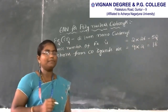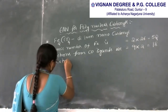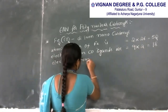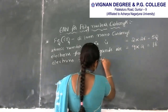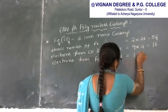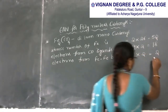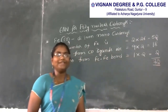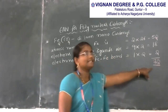In di-iron nonacarbonyl there is 1 metal-metal bond, which is an iron-iron bond. Electrons from the iron-iron metal bond: 1 into 2 equals 2. Total: 52 plus 18 plus 2 equals 72.